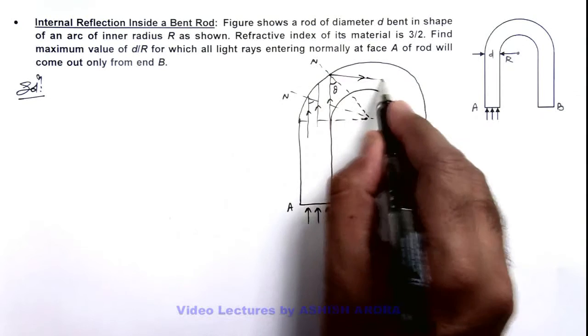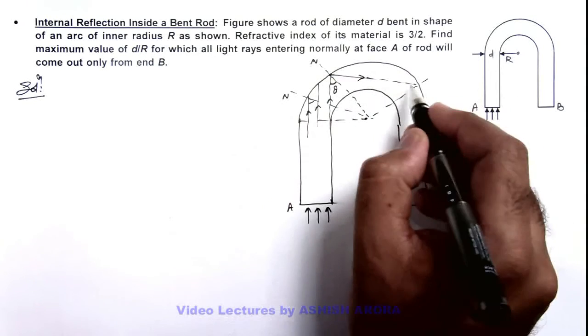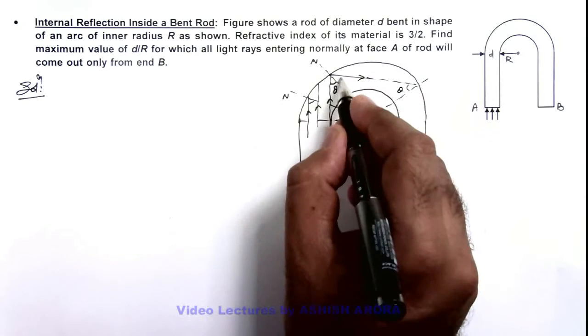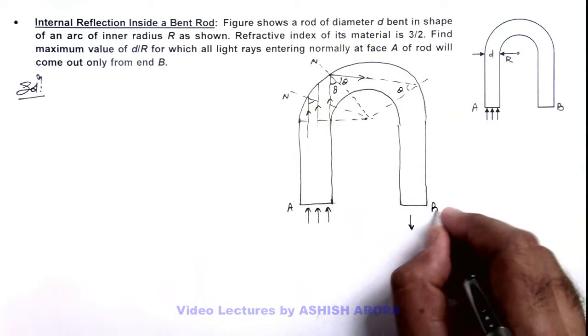Then at all points wherever this will go, due to the curved surface of same radius of curvature, the angle would be equal. So it will be internally reflected and finally light will come out only from end B.